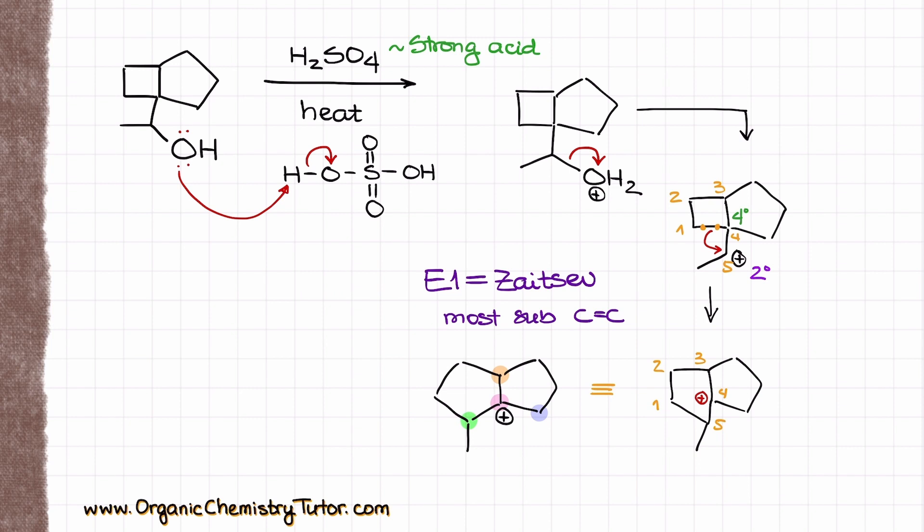Those are going to be my green option and my orange option but if I draw all of them pulling off the orange hydrogen will give me a double bond that looks like this. Pulling off the blue hydrogen will give me a double bond looking like that and finally pulling off the green hydrogen will give me a double bond that looks like this. And in this case both orange double bond which I have right over here and the green double bond that I have over here are both connected at four different carbons.